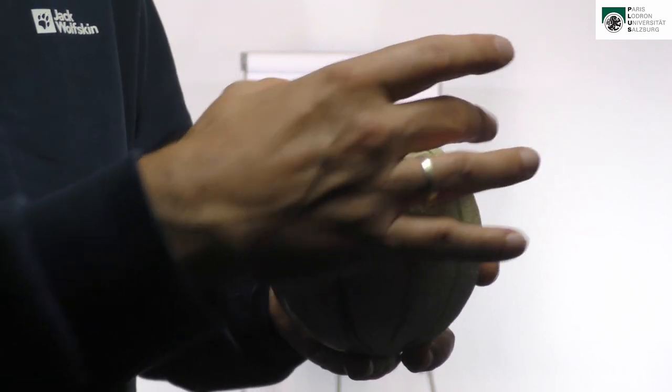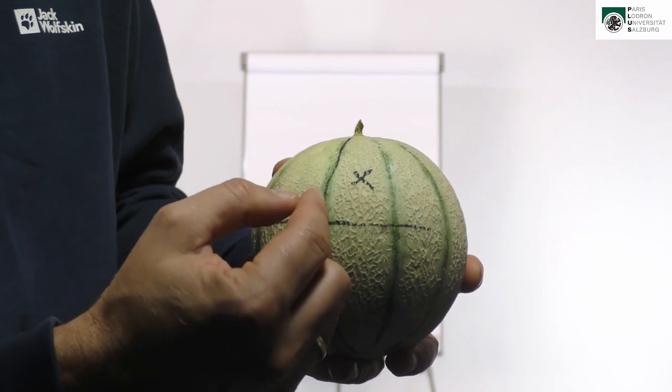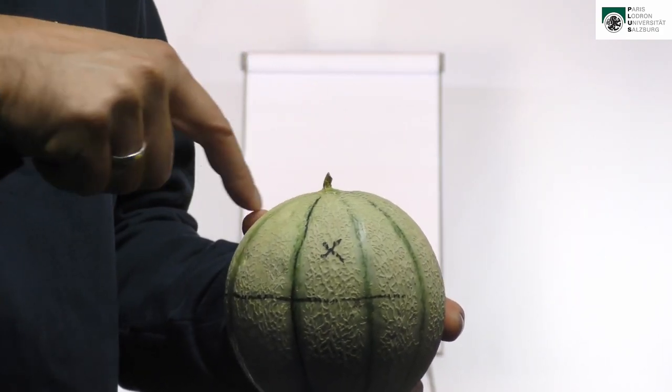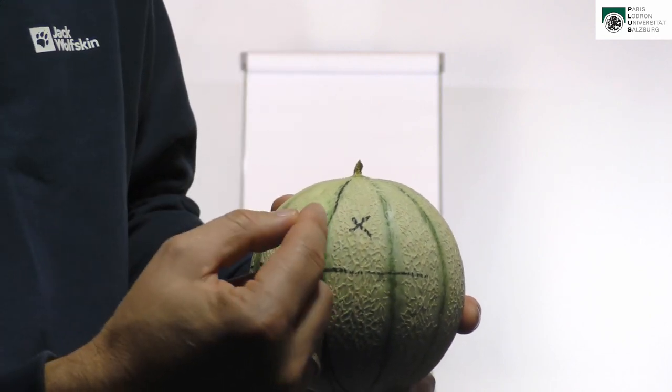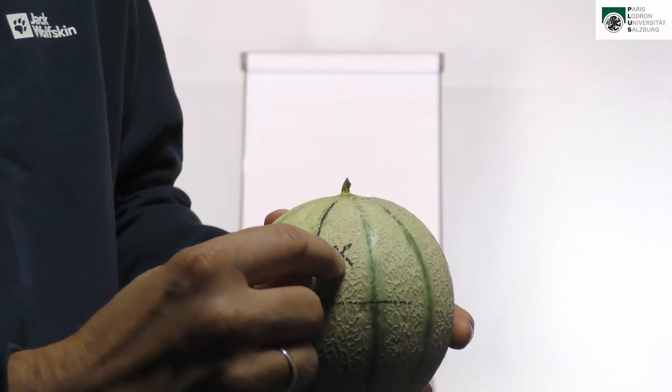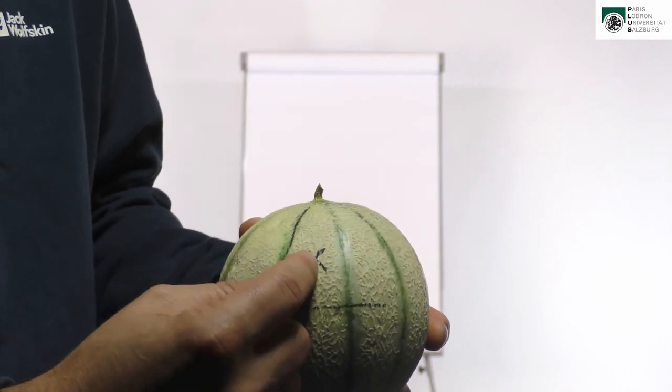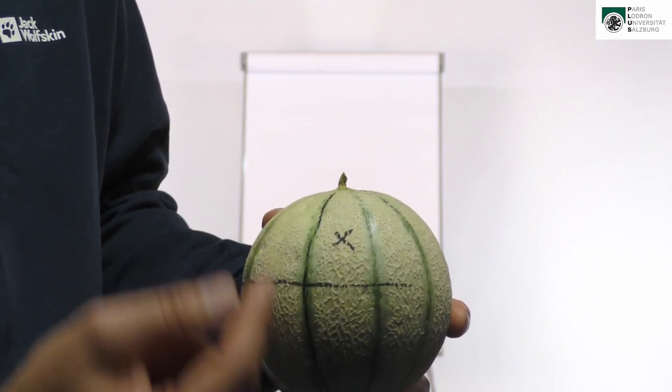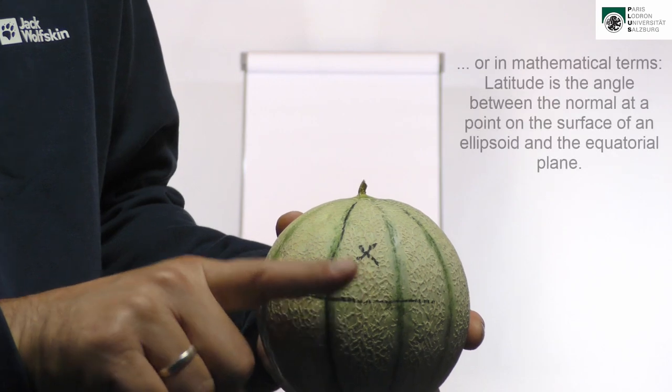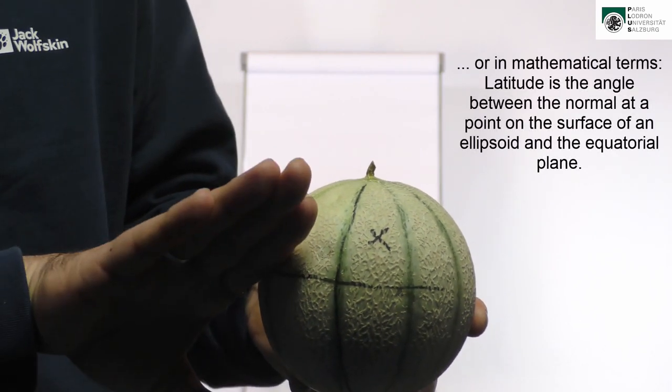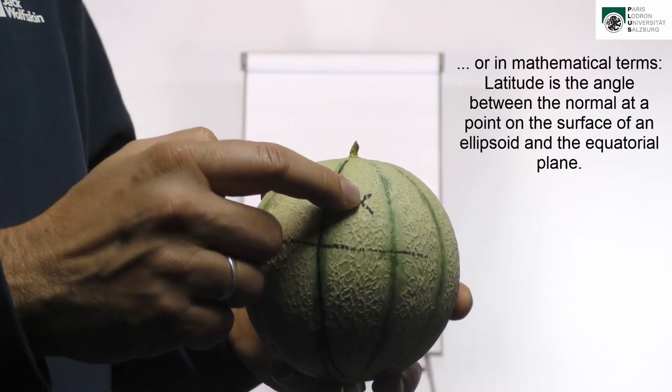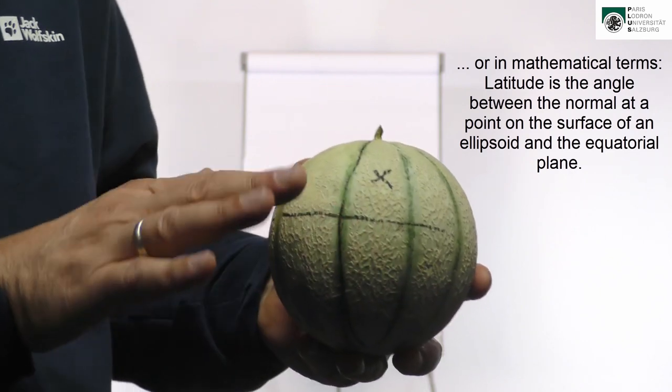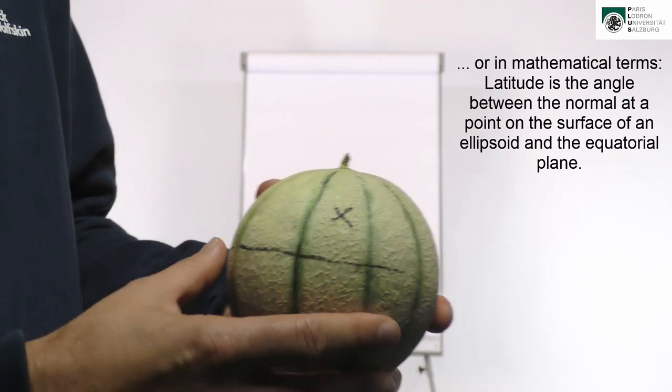So each point on the surface has a so-called longitude. That's the angle around the pole. This is, for example, the city of Salzburg that has a longitude of 13 degrees east of Greenwich and a latitude. That's the angle up from the equator. And in the case of Salzburg, it's 47 degrees up to the north. So it's a cool way because we can unambiguously measure the coordinate of every point on the earth.